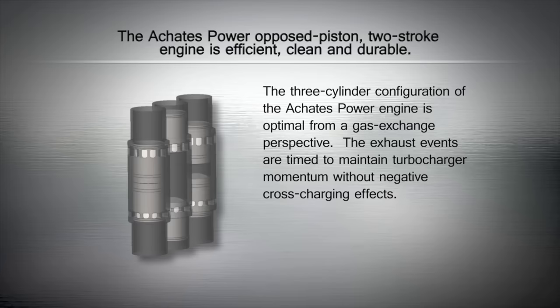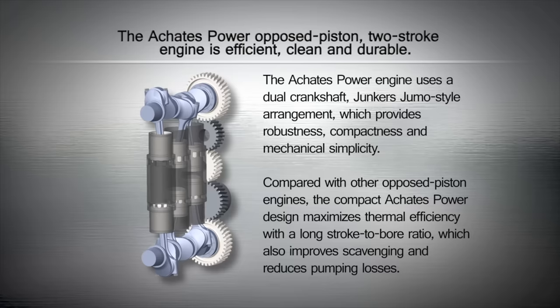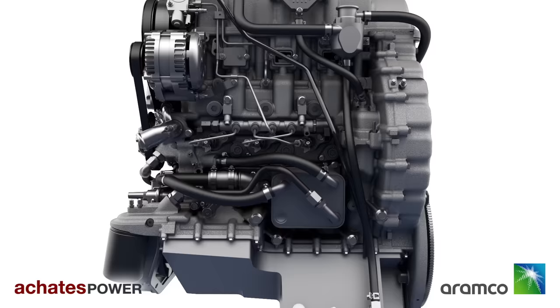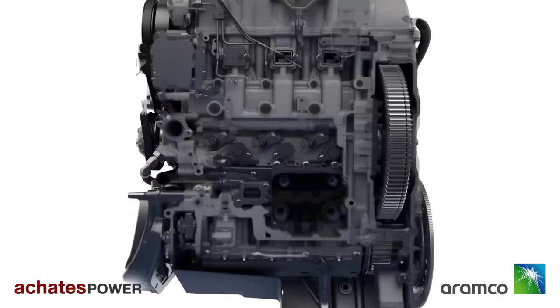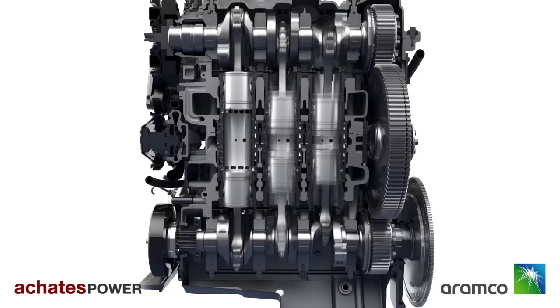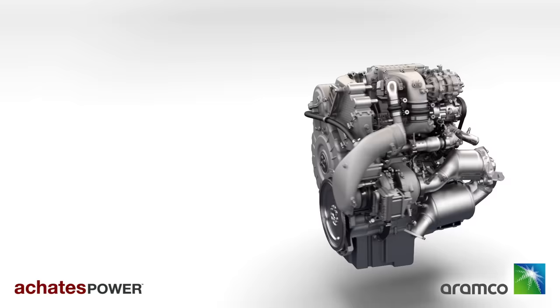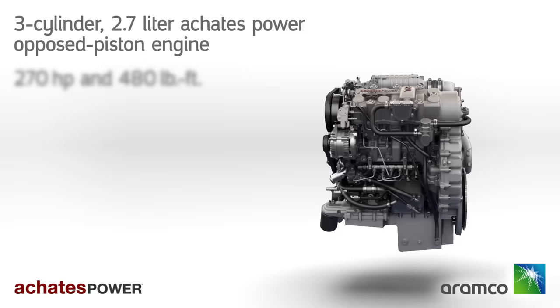The top pistons and bottom pistons each rotate an individual crankshaft, and these two crankshafts are then geared together to supply power to a single output shaft. Now, while having two crankshafts may seem like an additional complexity, this engine has no valve train, meaning no camshafts, rocker arms, valves, valve springs, and even no cylinder head. This particular engine we're looking at is the Achates Power 2.7 liter three-cylinder engine, which is good for 270 horsepower and 480 pound-feet of torque.